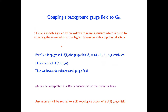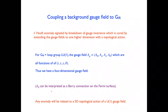For G_IR being the loop group L(U(1)), the gauge field involves the ordinary electromagnetic components A_0, A_x, A_y, plus an additional A_theta corresponding to the theta direction. These are taken as functions of t, x, y, and theta, giving a four-dimensional gauge field. The A_theta component has a nice interpretation as a Berry connection on the Fermi surface, telling us how to move in the theta direction along the Fermi surface. With a four-dimensional gauge field, any anomaly will be related to a 5D topological action of a U(1) gauge field. The natural guess for this topological action is 5D Chern-Simons theory, with a coefficient m that is quantized to be an integer. The claim is that m equals plus or minus one correctly captures the physics of the Fermi liquid.